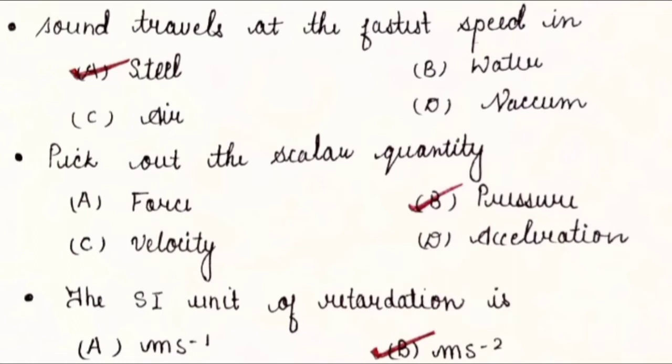Next, pick out the scalar quantity: A) force, B) pressure, C) velocity, and D) acceleration. Except pressure, all these three quantities are vector. So the answer is pressure. Pressure is the scalar quantity having only magnitude.